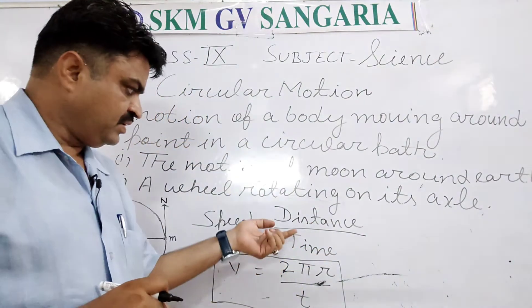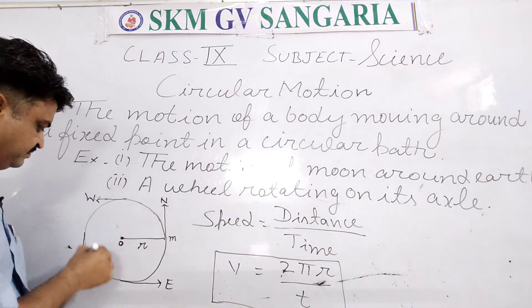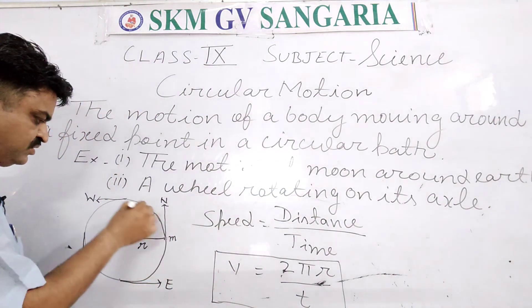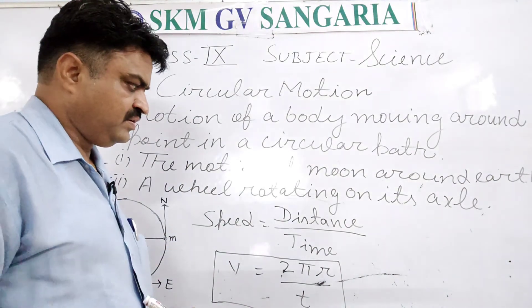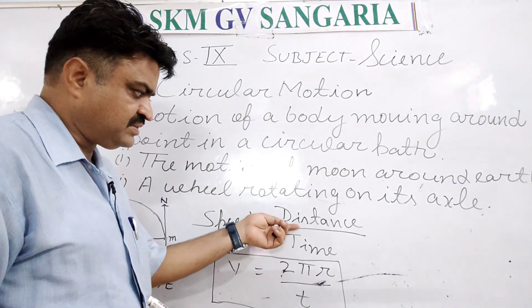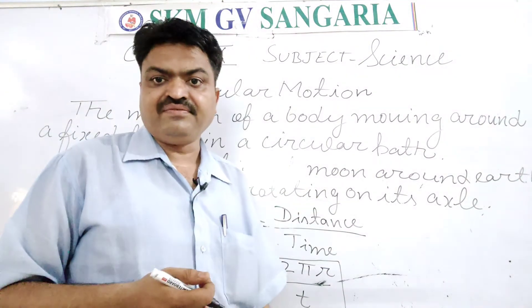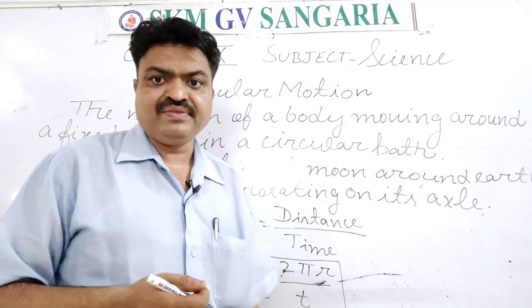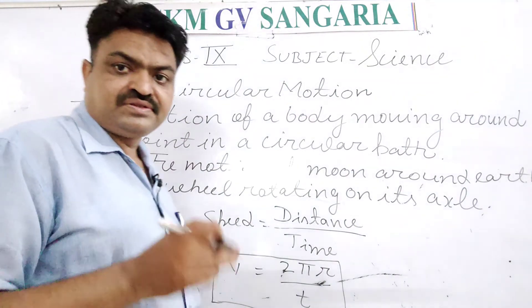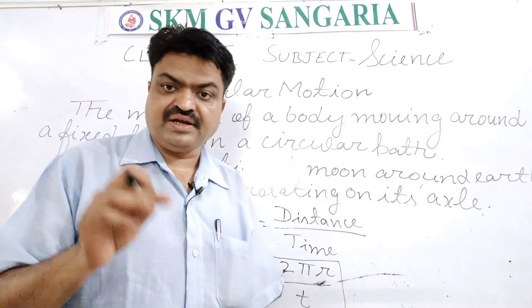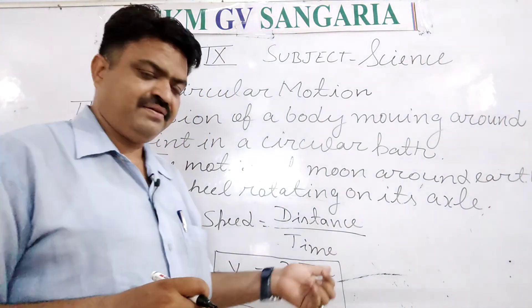Now, how do we get the distance or circumference in the case of a circle? In place of the distance we write the circumference of the circular track or circular path. And what is it? It is 2πr.